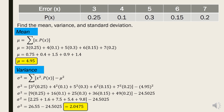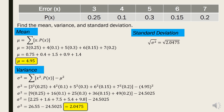We now have the variance, which is 2.0475. To find the standard deviation, we take the square root of the variance. Since the variance is 2.0475, the standard deviation is approximately 1.43.